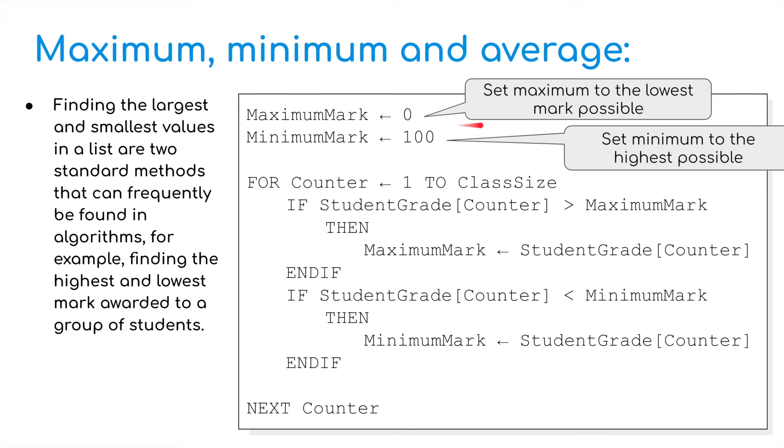I'm going to set the maximum mark to 0. I'm going to set the minimum mark to 100. And then I'm going to go for counter, we assign, like we've done in the past, 1 to class size. If the student grade is greater than the maximum mark, then maximum mark has been assigned student grade. And if the student grade is less than the minimum mark, then minimum mark has been, sorry, student grade has been assigned to the minimum mark. So we're looking through, we're going through all the marks until we've got a lowest mark and a highest mark based on what the students have got in their exam.